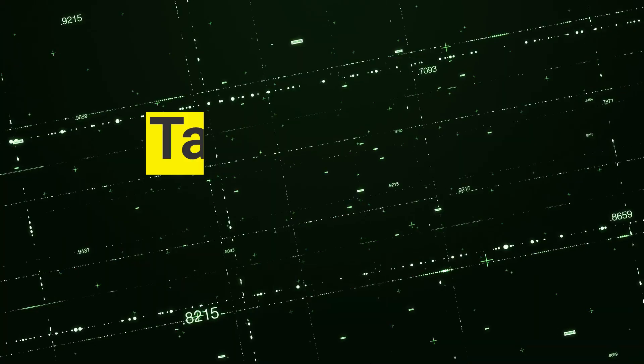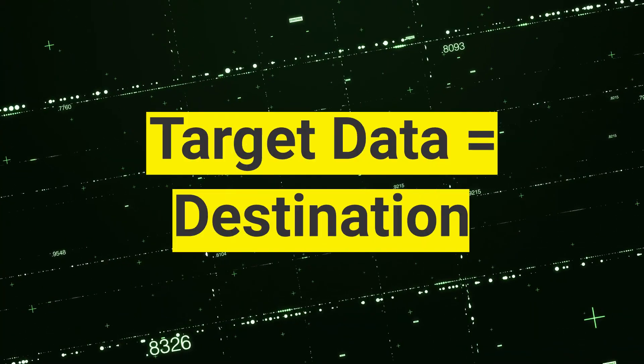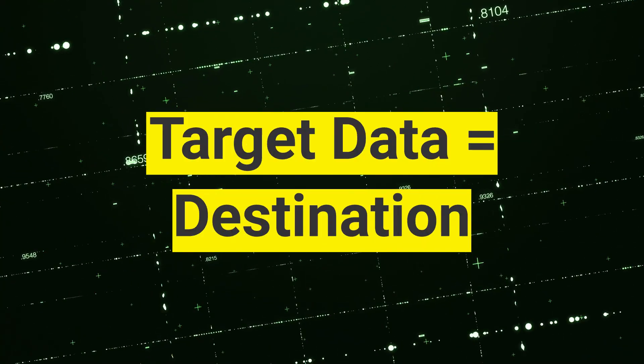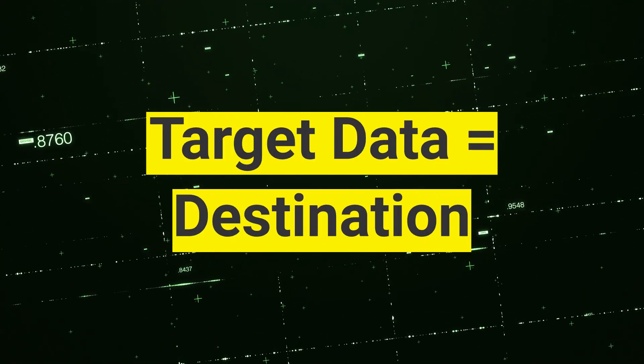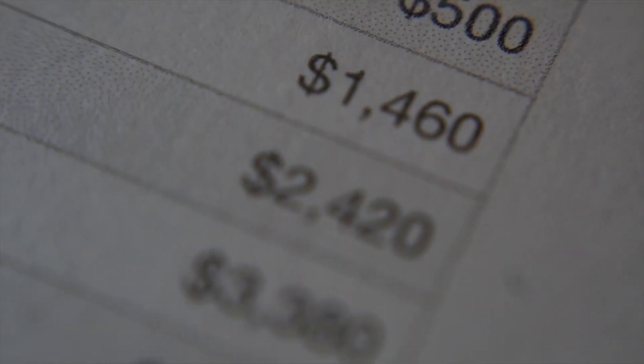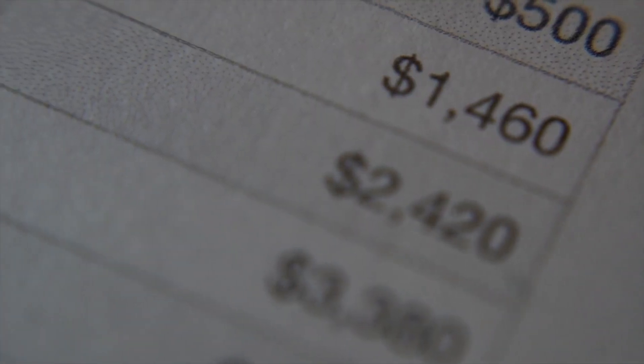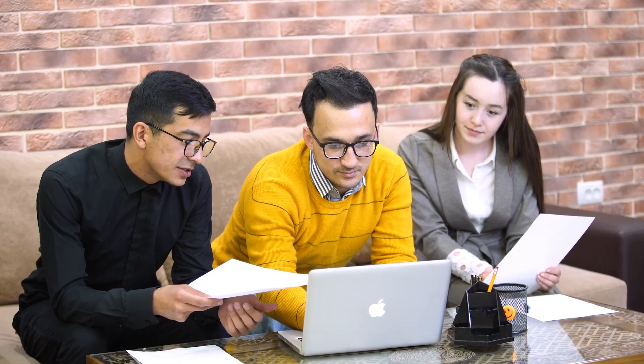Target data refers to the destination or the result of the data mapping process. Target data could be a database table, a file, or really any system where the mapped data is intended to be stored and utilized.